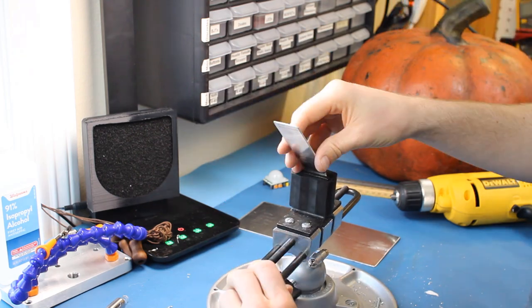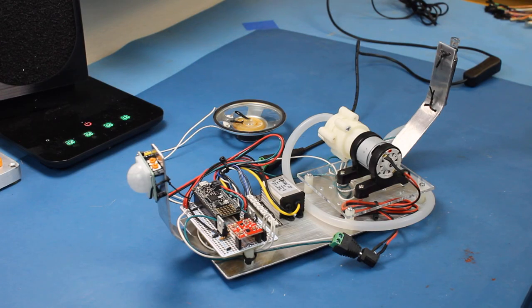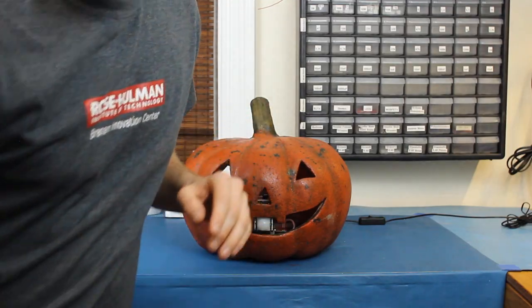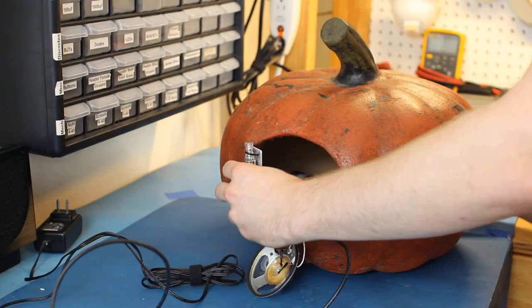From there, I could cut and bend the aluminum so that it barely fit in the cavity of the pumpkin. Then it was just a matter of marking and drilling holes so that I could mount all the electronics. Notice that I used a twist tie for the PIR sensor. This allowed me to move the PIR sensor up and down so that it perfectly fit in the mouth of the jack-o'-lantern. After that, it was just a matter of shoving it all into the pumpkin.